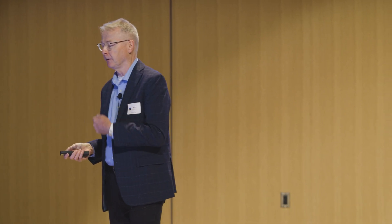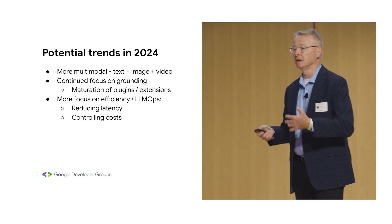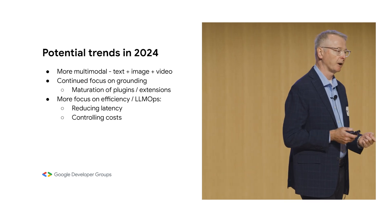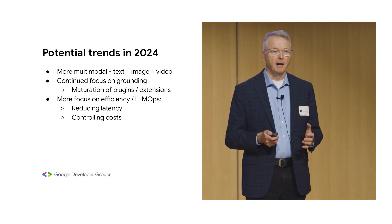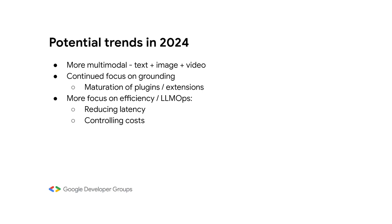Looking at trends that may be important in 2024: we're going to see more multimodal models — text, image, and video together in a single model working together. There'll be continued focus on grounding — customers want the power of a large language model but want it to answer questions about data behind their firewall or about a specific set of documents. And there'll be more focus on efficiency in LLM ops: reducing latency, making models efficient in providing responses, and controlling costs. Part of controlling costs is using the right model for the right application — not every problem needs the flagship model.